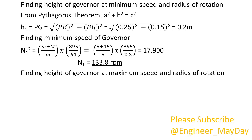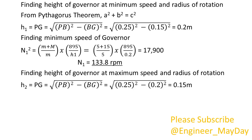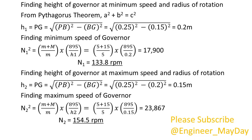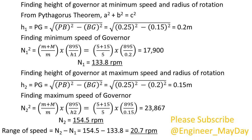Finding height of governor at maximum speed and radius of rotation: H2 equals 0.15 meters. Finding maximum speed of governor: N2 equals 154.5 RPM. Range of speed equals 20.7 RPM.